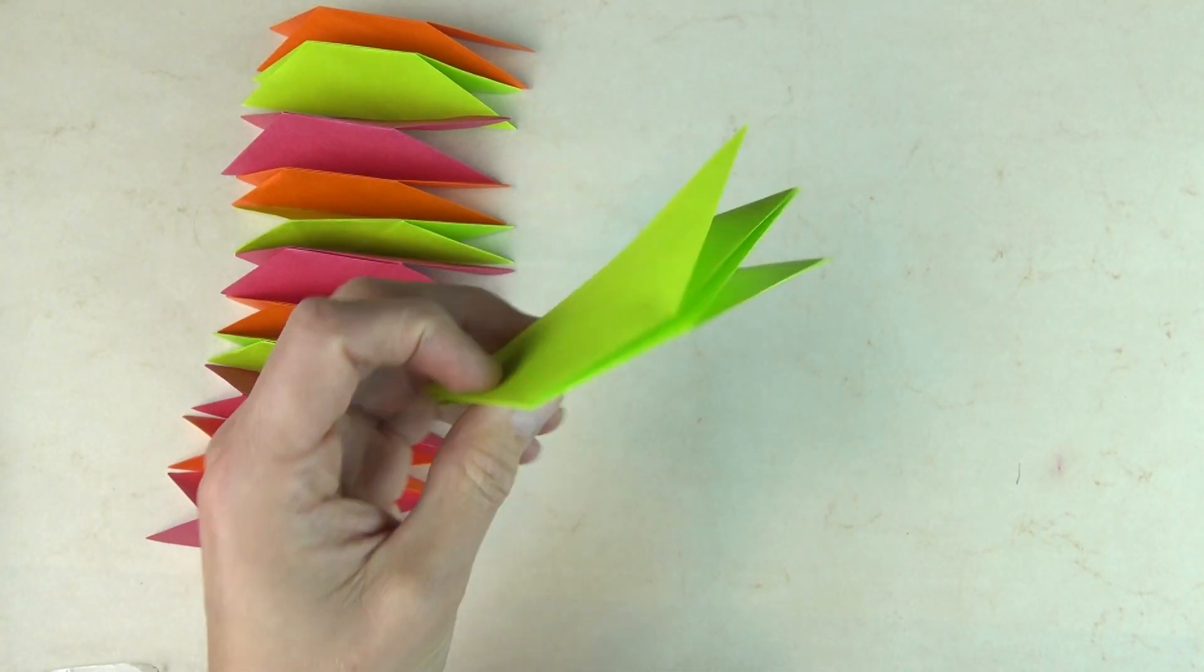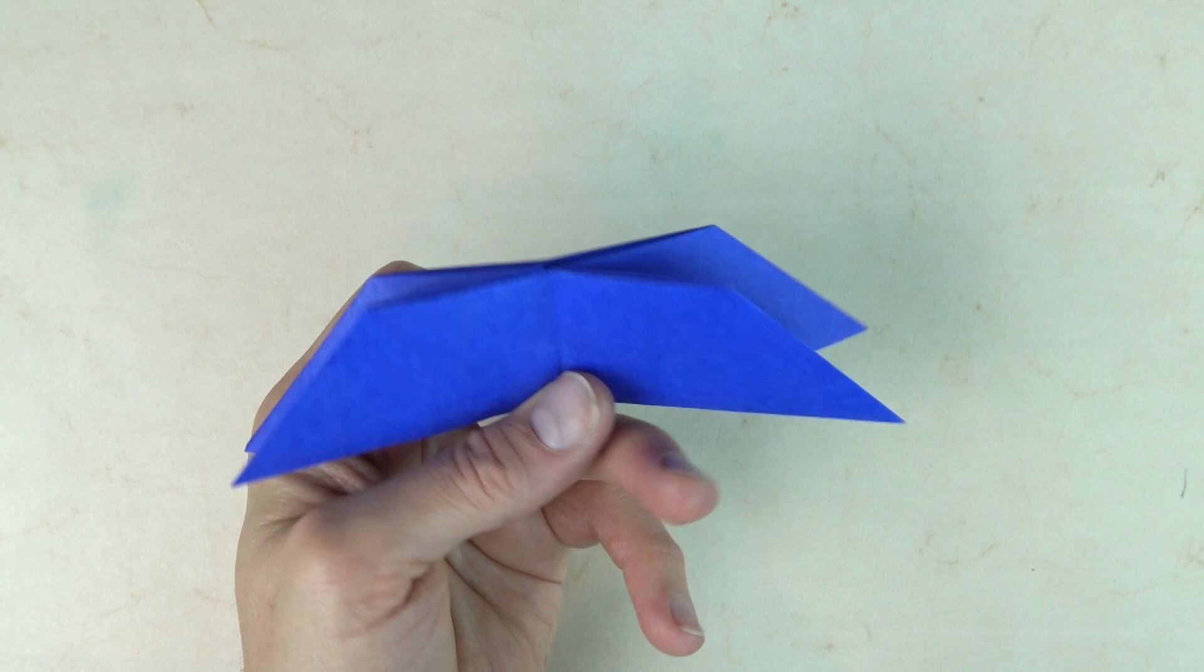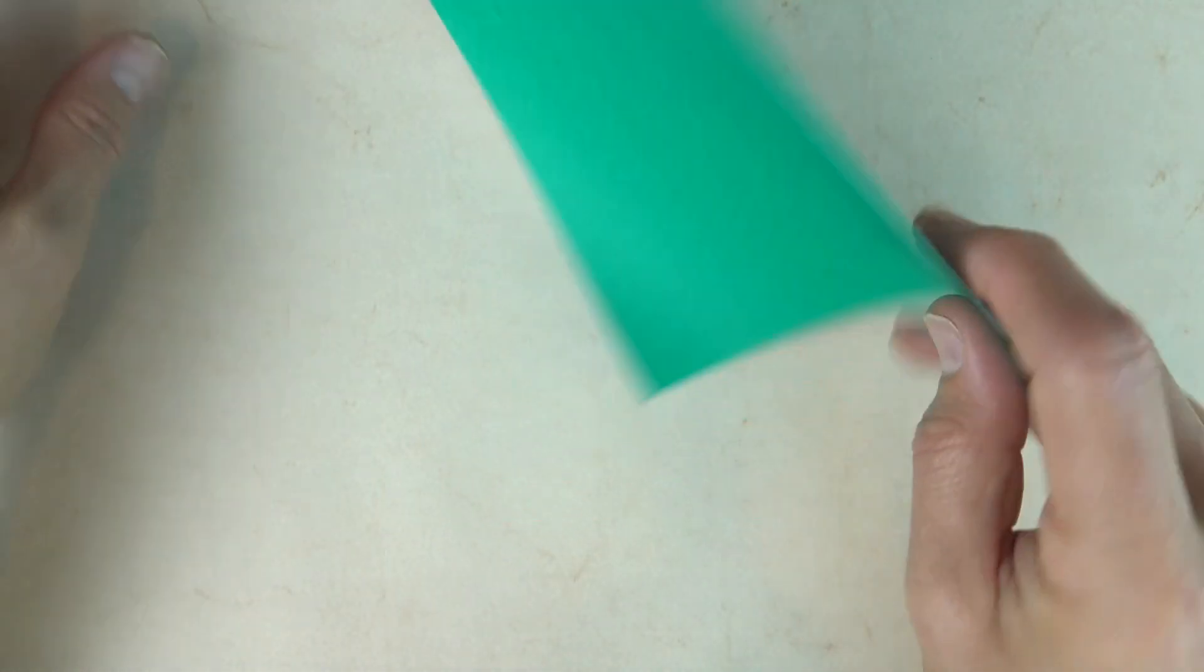Alright. So all edge modules are complete. Now it's time to work on the vertex modules. And this one we don't need a stencil. So the vertex modules are just sunken water bomb bases. So if you know how to do that, then just do that. But I'm going to show you how now. So let's begin.